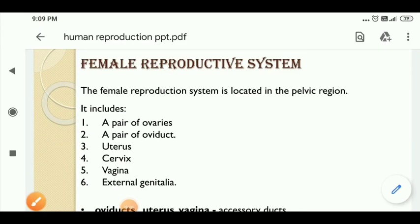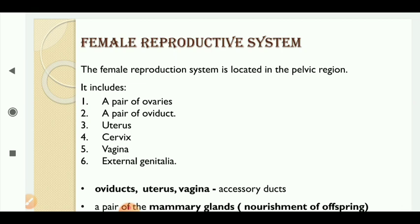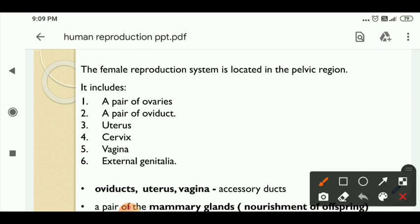Dear students, good morning. Today we will study about the female reproductive system. Last class we discussed about the male reproductive system clearly and thoroughly. So in this class we will learn about the female reproductive system. The female reproductive system is located in the pelvic region.